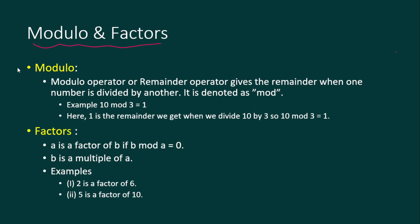The next topic is modulo and factors. This is a very important topic and you will use this in Python as you go further in the course. Modulo is basically the remainder when we divide one number by another. For example, ten divided by three — three times three is nine, so the remainder is one. The modulo function gives us the remainder, and it is also called the remainder operator.